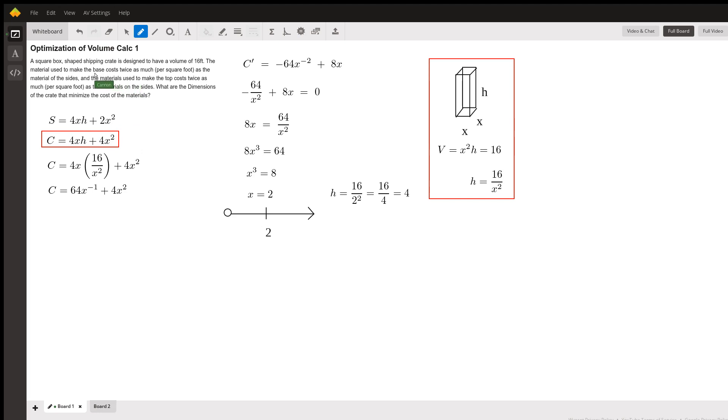We got a little extra information in our problem: the material used to make the base and the top costs twice as much per square foot as the sides. So we're just going to double that area. Our cost function is 4xh plus 4 times x squared. Before we start taking derivatives and trying to solve this, we've got the issue of having two different variables. We're going to take this 16 over x squared and plug it in in place of h.